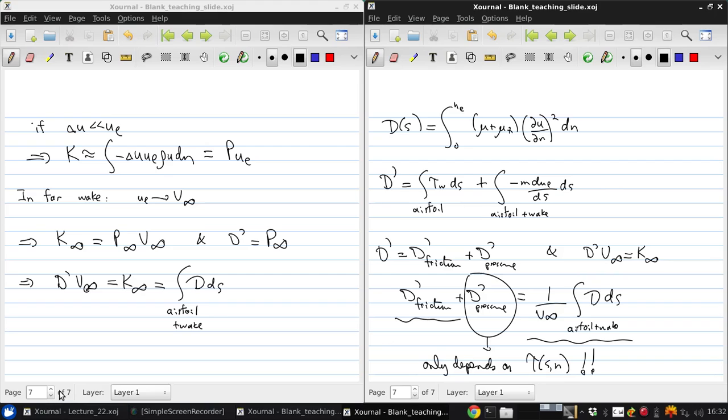So all of the power needed to overcome moving an airfoil through the air at velocity v infinity is ultimately caused by viscous effects, viscous dissipation. Even though we make this distinction between friction and pressure drag, in the end it's all caused by viscous effects.